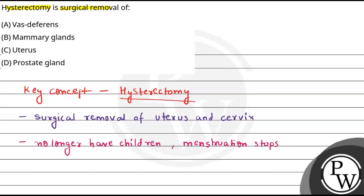And what happens is that the ovaries will still produce hormones, and what happens is that that will lead to an imbalance of hormones because it is not used up. And that is the reason this is the risk of hormonal imbalance. So, we can say what is Hysterectomy? It is the surgical removal of uterus. That is, option C is correct.